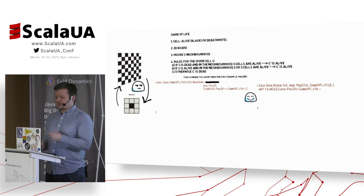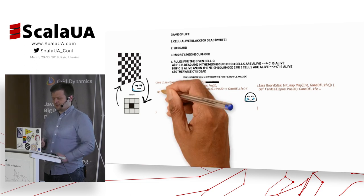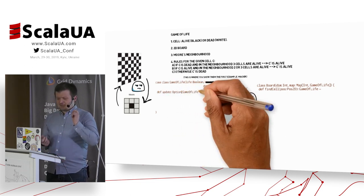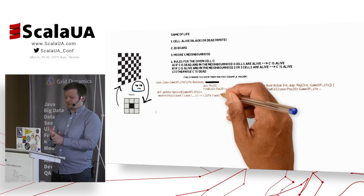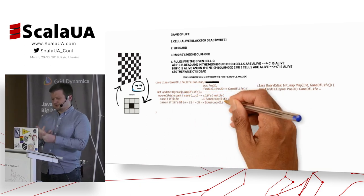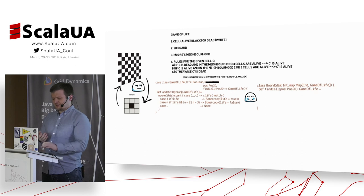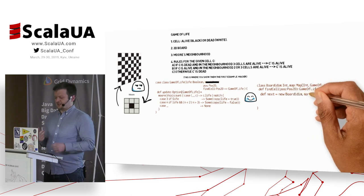And then we need a method called update that will create our new version of the cell. This will return here only an option of Game of Life because if we don't change anything, then we can reuse our existing cell. So we don't have to create the same copy without any changes.